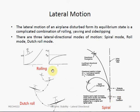Rolling mode is exactly the same as the 1 degree of freedom rolling motion discussed in the first part of this video. The rolling is characterized by a first order motion and it is a highly convergent, fast and stable mode.